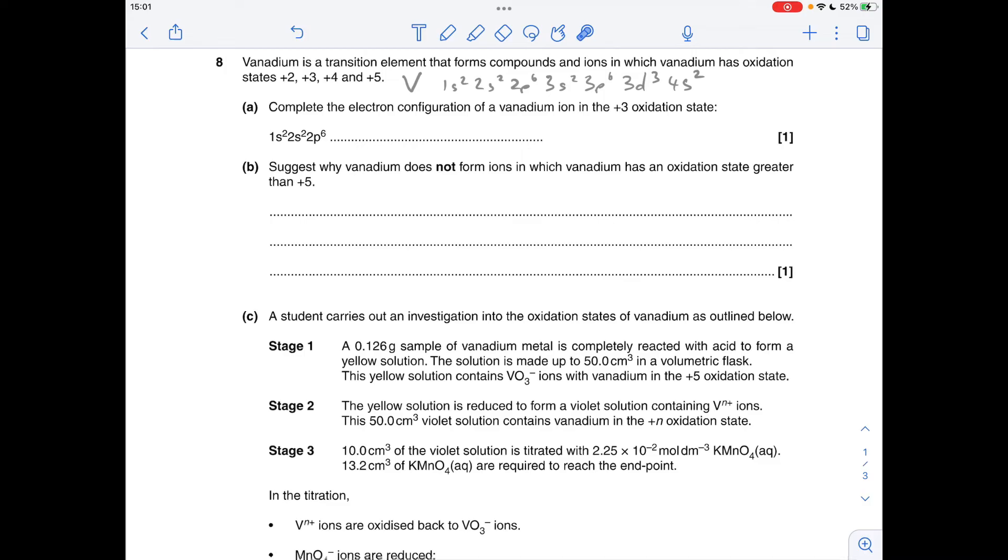So we'll go through the answers now. We've got to complete the electron configuration for a vanadium ion in the plus three oxidation state. I've just drawn up the full electron configuration for the atom, and remember, when transition elements form ions, it's the 4s electrons that go first, so we've got to lose three electrons, so they will go, and that will go down to 3d².